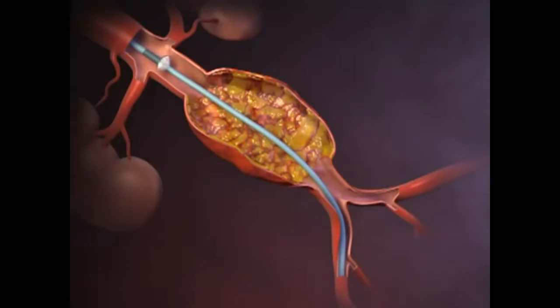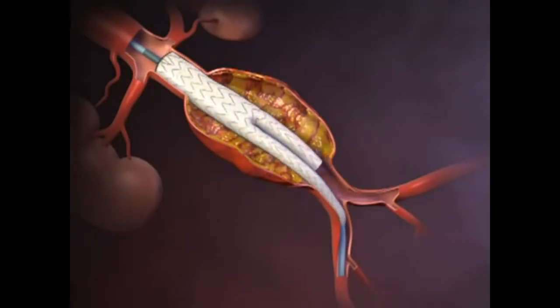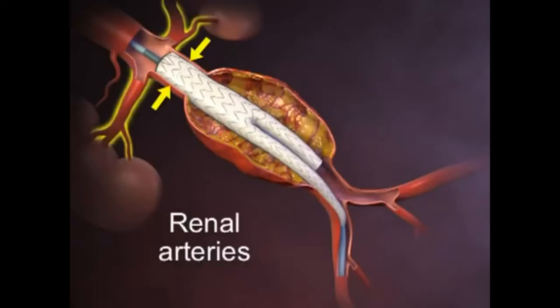The body of the stent graft, composed of a non-permeable polyester material supported by a self-expanding flexible metal frame, is partially deployed with the undeployed upper portion of the device positioned immediately below the renal arteries.